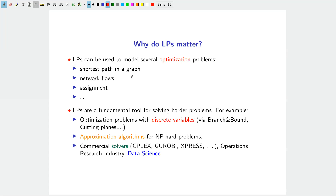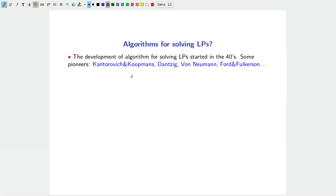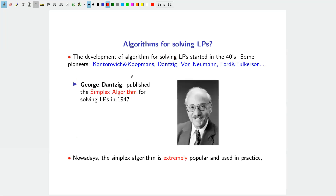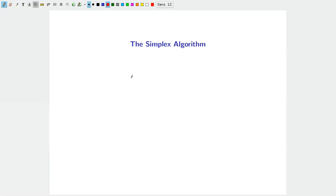Linear programming has a tremendous impact in practice: commercial solvers heavily rely on LP techniques, which drives impact in operations research, data science, and industry. Given how fundamental linear programming is, how about algorithms for solving it? Development of algorithms started in the 1940s, and one of the most famous is the simplex algorithm, invented by George Dantzig in 1947.